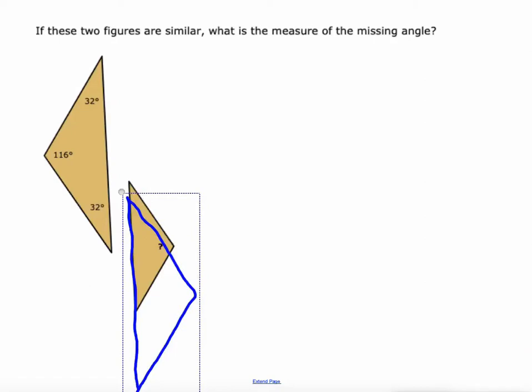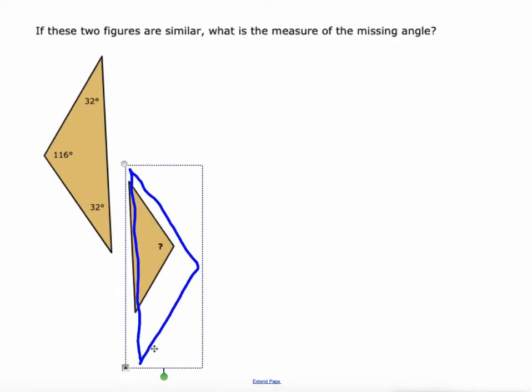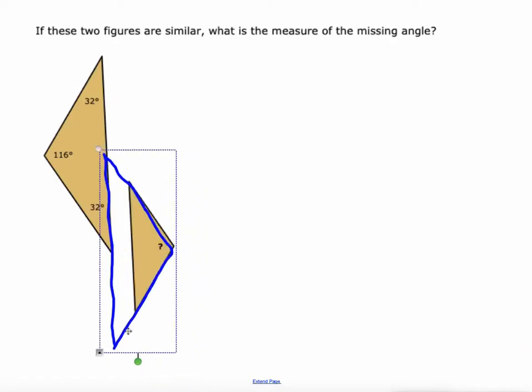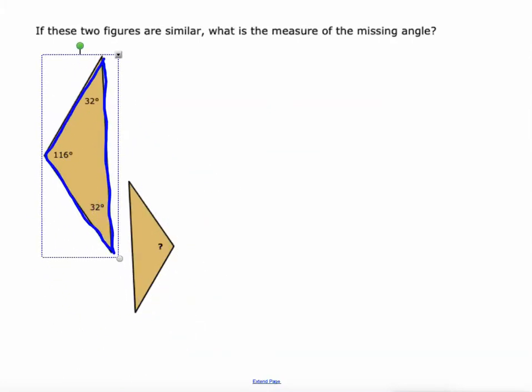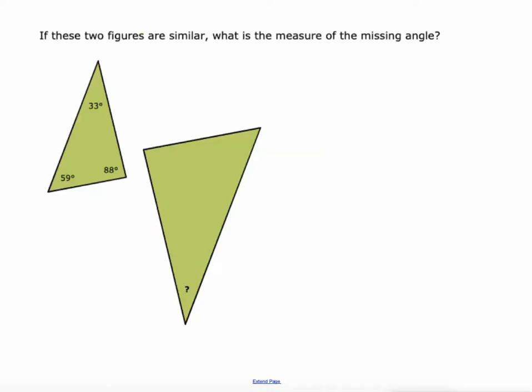The bottom one's congruent, the top one's congruent. We would just need to do a dilation of it. But the question is what's that original one? Well if we go back we can see that that angle is 116 degrees. So it's this angle right here that corresponds with this angle. So 116 degrees is the missing angle. Obviously you can't move shapes around like that on your screen probably, but you can kind of imagine it.